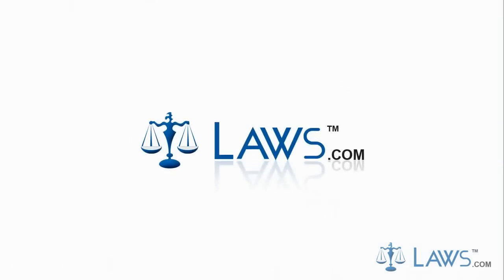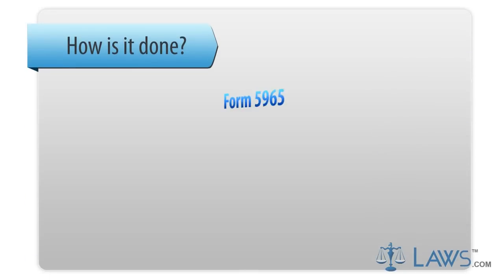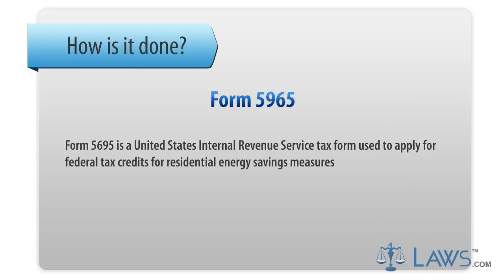Laws.com Legal Forms Guide. Form 5695 is a United States Internal Revenue Service tax form used to apply for federal tax credits for residential energy savings measures.